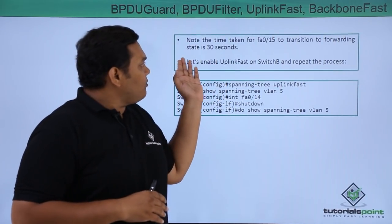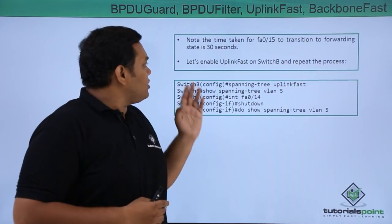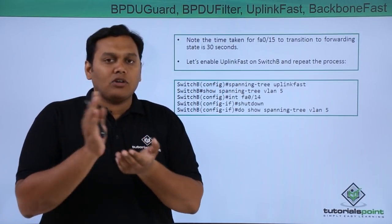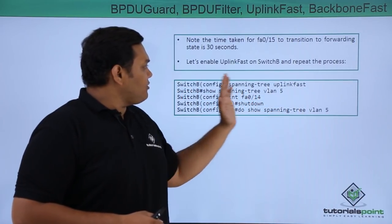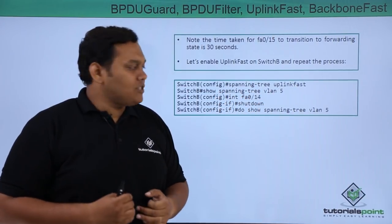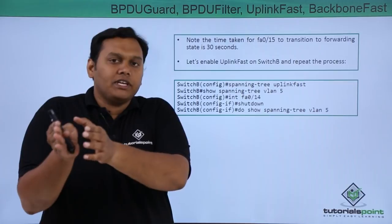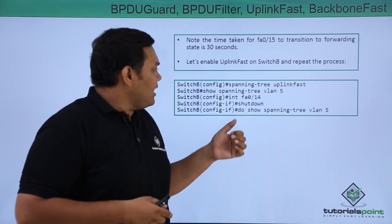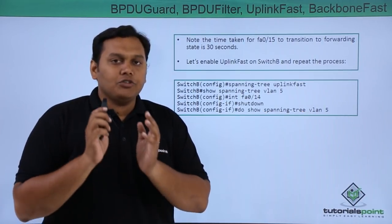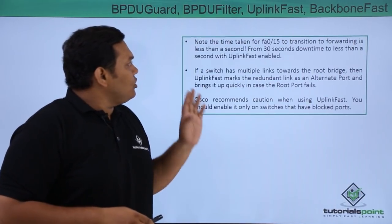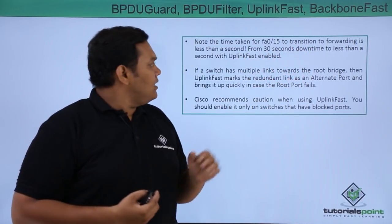That means it takes 30 seconds for transition to forwarding from fast ethernet 0/15. Now let us enable uplink fast on switch B and repeat the process. You use 'spanning-tree uplink fast' on switch B, then go to interface FA0/14 using 'int FA0/14', enter shutdown, then run 'show spanning-tree VLAN 5' to display the spanning tree VLAN 5 information. The time for FA0/15 to transition to forwarding is now less than 30 seconds with uplink fast enabled.